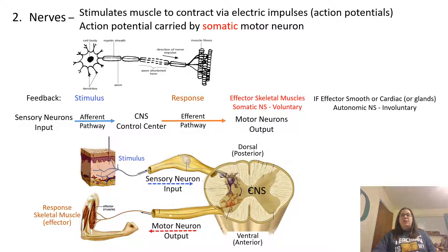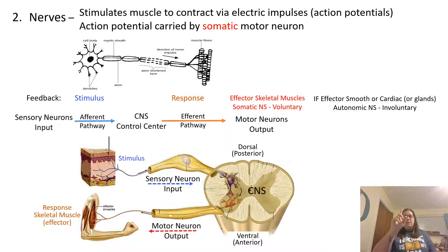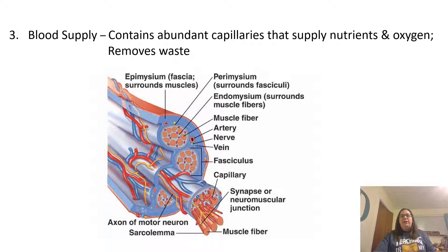For example: a sharp object contacts the skin, the stimulus is sent through the sensory neuron to the central nervous system, which determines what needs to be done and sends a motor neuron output telling the skeletal muscle to move — pulling your hand and arm back by contracting the bicep. Your muscles also have a good blood supply with abundant capillaries to supply nutrients and oxygen, because these cells need to produce high levels of ATP since contraction requires energy. Blood vessels also remove waste products made through cellular respiration.